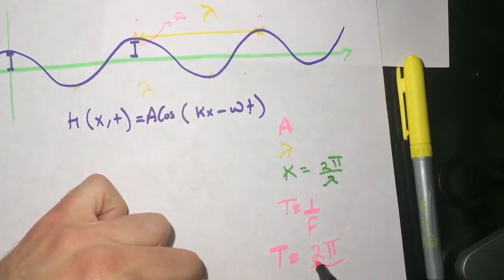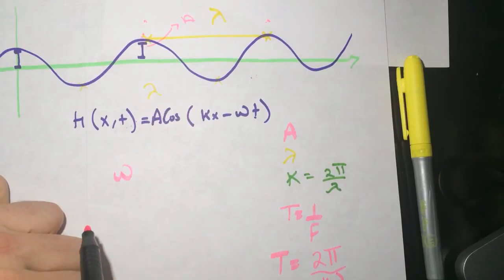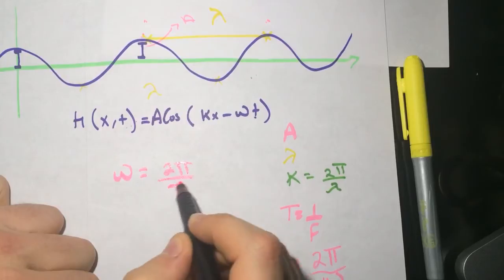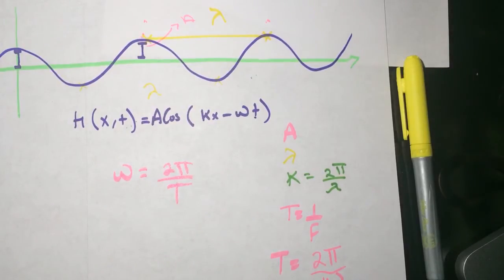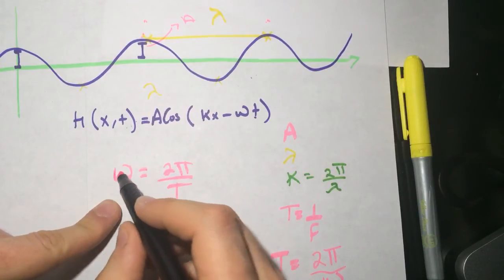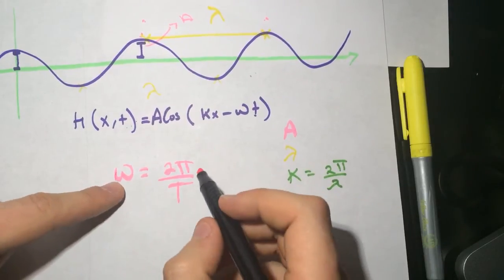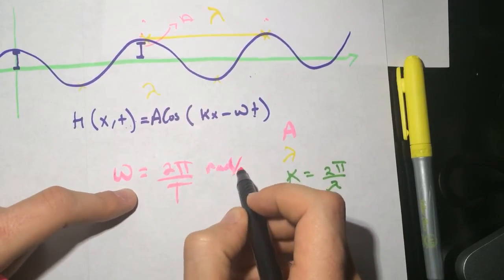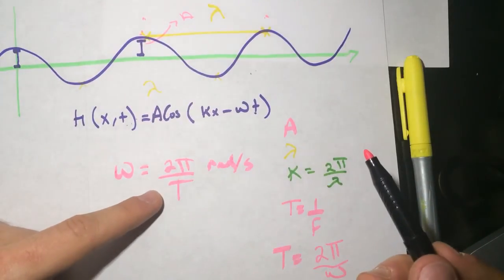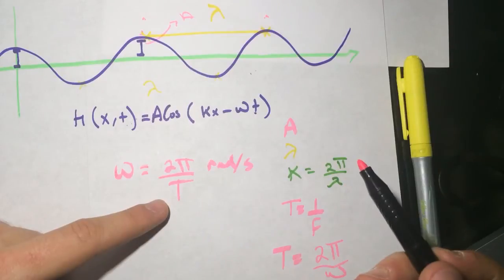So T equals two pi divided by the omega. So what is omega? Omega is going to be equal to two pi over T. It's just playing with this algebra. And you can remember this by remembering the units for the omega, the angular velocity, which is rad per second. And the pi is radian. And the time is in second.